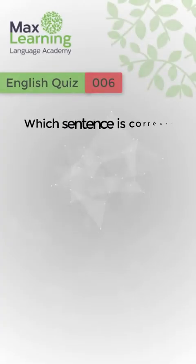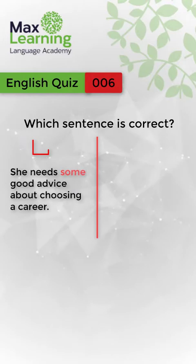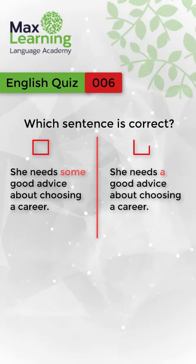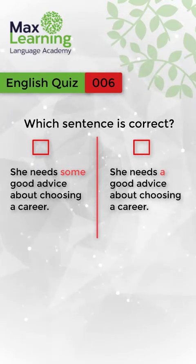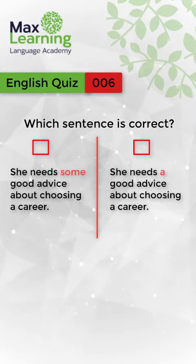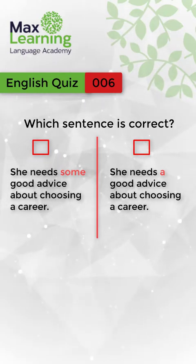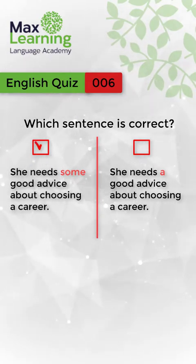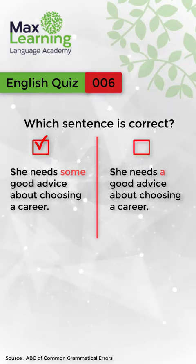Which sentence is correct? Option A: She needs some good advice about choosing a career. Option B: She needs a good advice about choosing a career. I'll give you some time to think. The correct answer is: She needs some good advice about choosing a career.